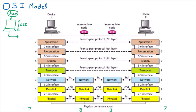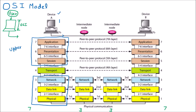Looking at device number one — this is a computer where the wire is going out and the user is on this side. The top three layers help the user to work; these are called the upper layers. The bottom three layers are the lower layers, which help the network to work. In the middle we have the middle layer, which is the transport layer. So upper layers help the user to work and lower layers help the network to work.